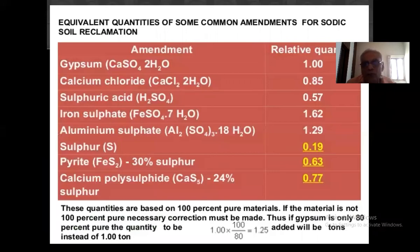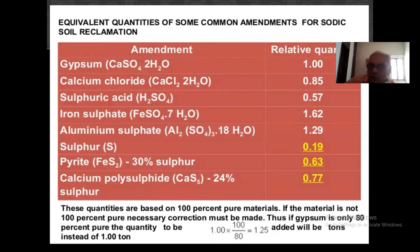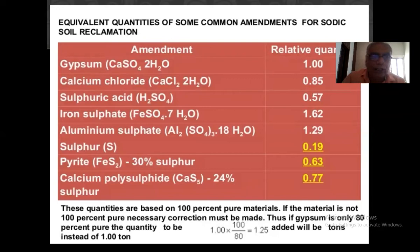Equivalent quantities of some common amendments for sodic soil reclamation: gypsum, calcium chloride, sulfuric acid, iron sulfate, ammonium sulfate, sulfur, pyrite, and so on. Among these, iron sulfate and aluminum sulfate require larger quantities. Gypsum is generally used in agriculture because it is cheaper and is a byproduct of GSFC and other fertilizer factories. The government of India started giving it at very cheap rates to farmers, and the government also gave subsidized railway transport so farmers can use gypsum for reclamation of soil.